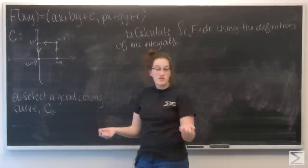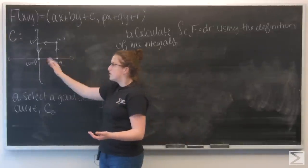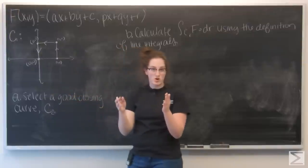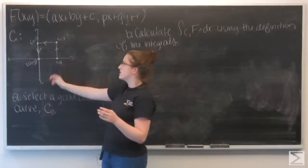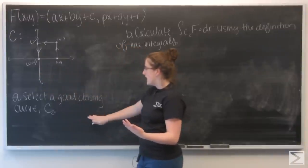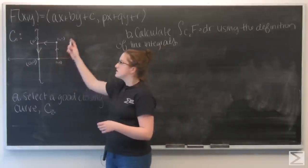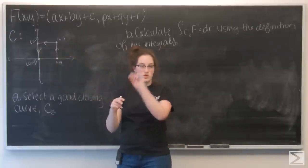I'd like to use Green's theorem to calculate the line integral of f, but I don't have a closed curve, right? It starts at (1,0) and ends at (0,0). So to facilitate this, part A asks to select a good closing curve c2 that will make this line integral over a closed interval.